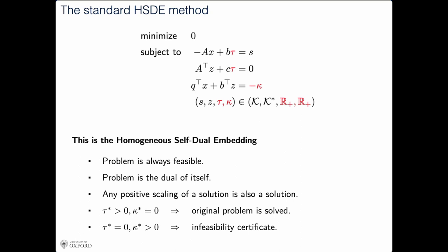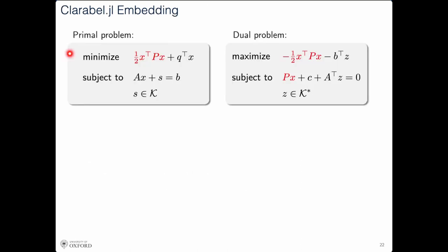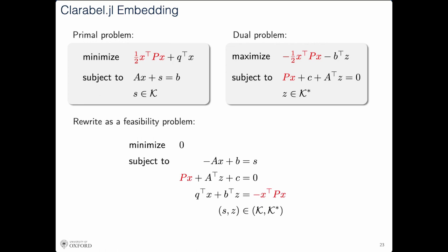What's different about our approach is that we try to keep P in the objective function all the way through rather than getting rid of it. I'll show you the same steps but keeping that P term where it wants to live. I have the primal and dual problems as before, but rather than dropping those terms and reformulating them as constraints, I leave them in place. When I rewrite the two problems as one joint feasibility problem, the dual equality condition now has an additional linear term Px, and the zero duality-gap condition has a quadratic term on one side.